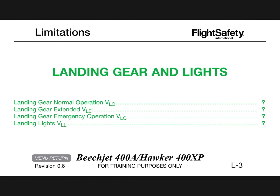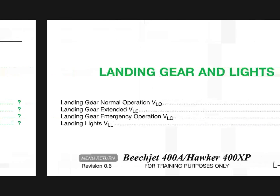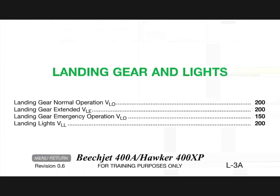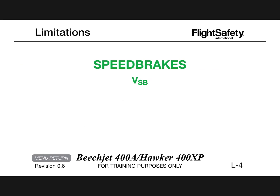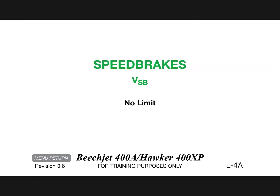Landing gear and lights: landing gear normal operating VLO is 200 knots. Landing gear extended VLE is 200 knots. Landing gear emergency operation VLO is 150 knots. Landing lights 200 knots. Speed brakes no limit.